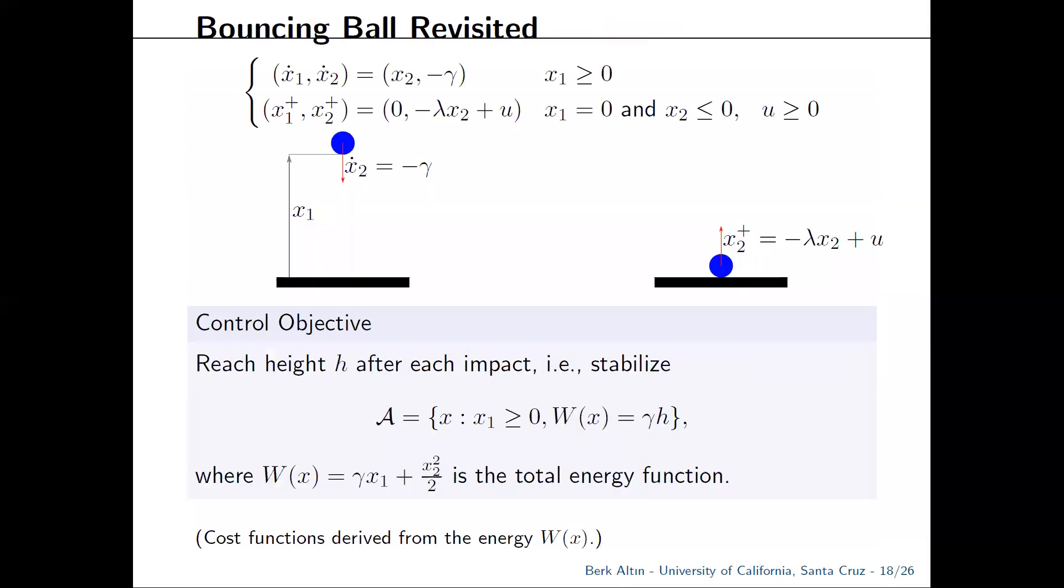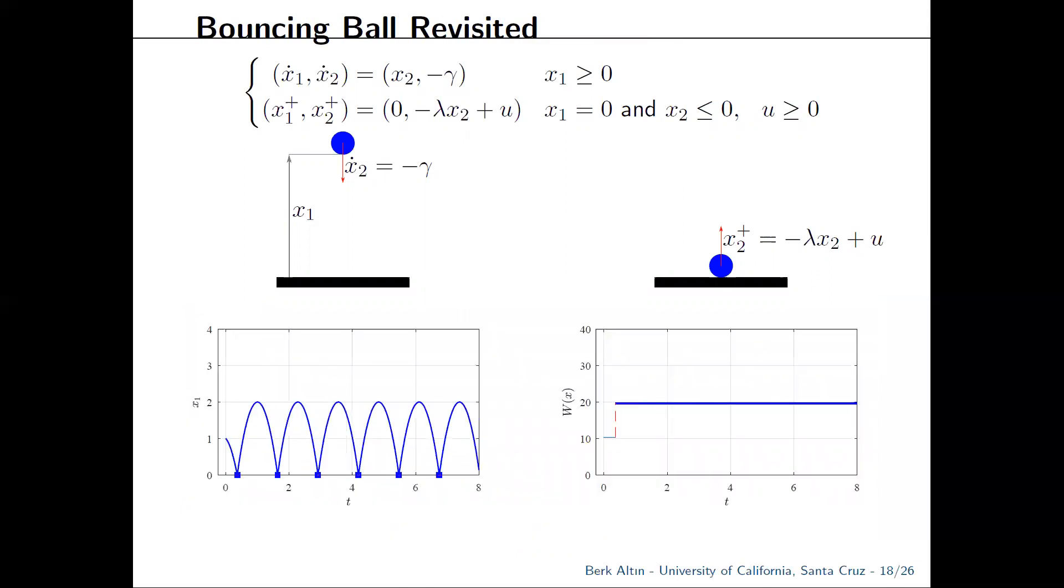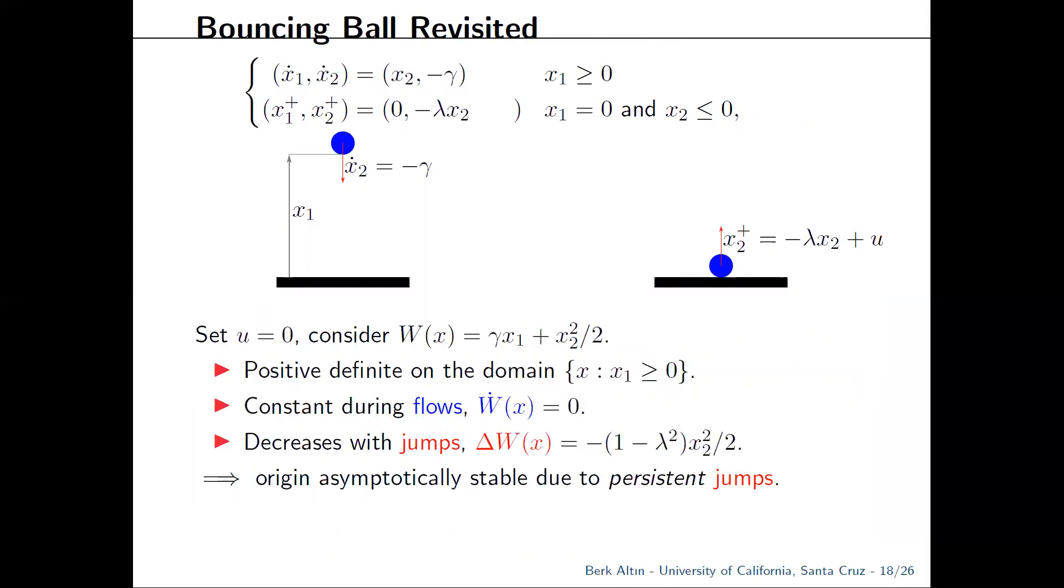Now, if you can satisfy these assumptions, good things will happen. One example is that for the bouncing ball, you can stabilize limit cycles defined by the level sets of the total energy function. And you do that by deriving cost functions from the energy function w. However, satisfying the CLF inequalities is not straightforward. The design is quite involved and we want to simplify it.